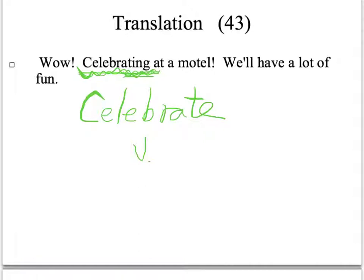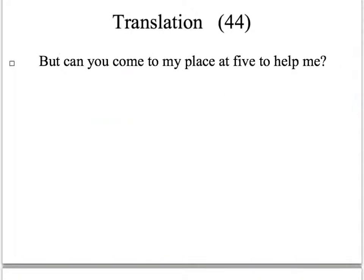接下來 We'll have a lot of fun，其實有很不一樣的寫法，只要意思說得過去老師都會給分。比如說 We'll definitely have fun，或是 We'll certainly have fun 都沒有問題。因為中文有「一定」，把它寫出來也是對的。